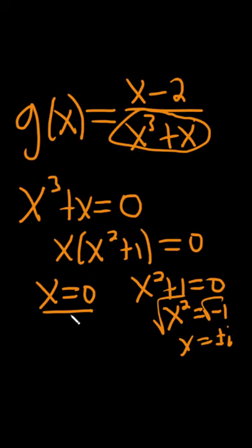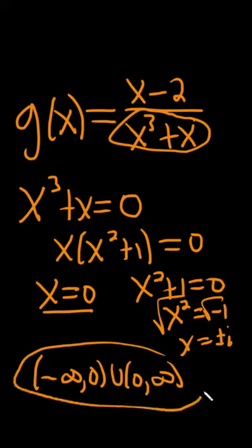So that's the only number that's not in the domain. So the domain is everything except that. So it's negative infinity all the way to zero, union zero all the way to infinity, and we're excluding the zero from the domain.